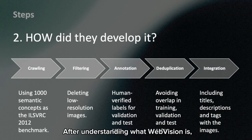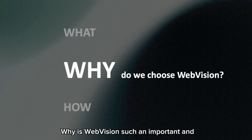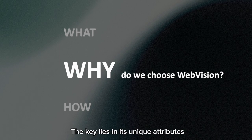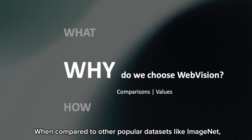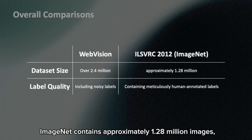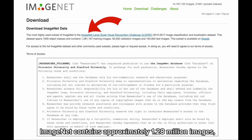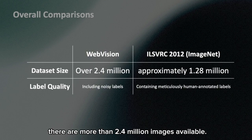After understanding what WebVision is, the next question is: why do we choose WebVision? Why is it such an important and valuable resource for researchers? The key lies in its unique attributes and the advantages it offers over other datasets. When compared to popular datasets like ImageNet, WebVision offers several advantages. In terms of size, ImageNet contains approximately 1.28 million images, while WebVision has more than 2.4 million images available.